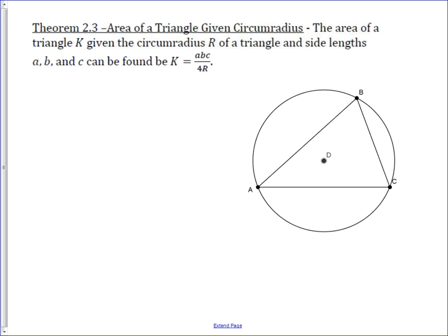The first is what we refer to as the extended law of sines. The extended law of sines says that twice the radius of a circumscribed circle is equal to what is the inverse of the traditional law of sines, and that is a over sine A and b over sine B and c over sine C.